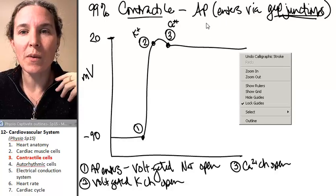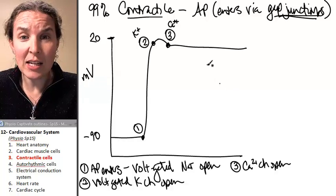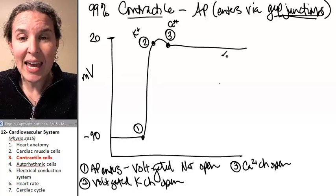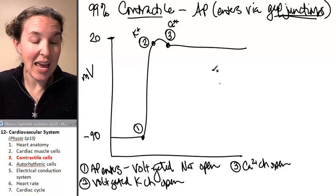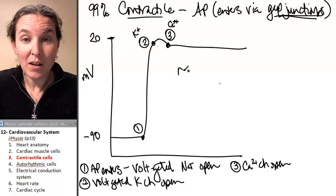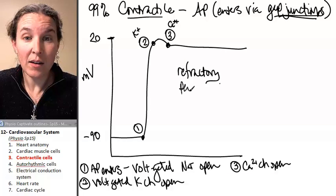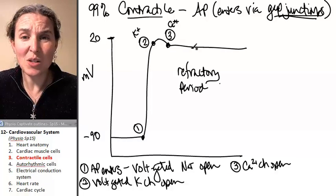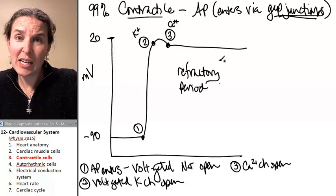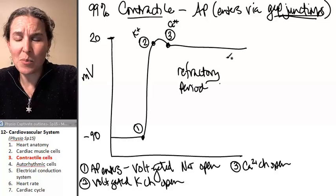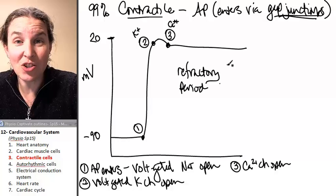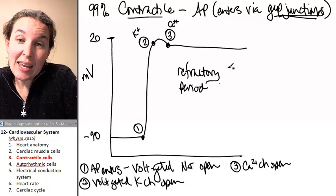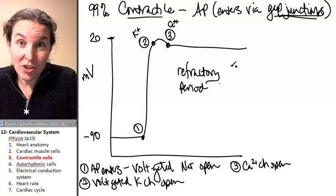And think about this, what does this plateau do? My friend, the contractile cell cannot be re-stimulated during this time. This is a refractory period. Why? Because we're already fully depolarized. How can we depolarize more? It doesn't matter if another action potential comes in. I am not going to contract during this time.